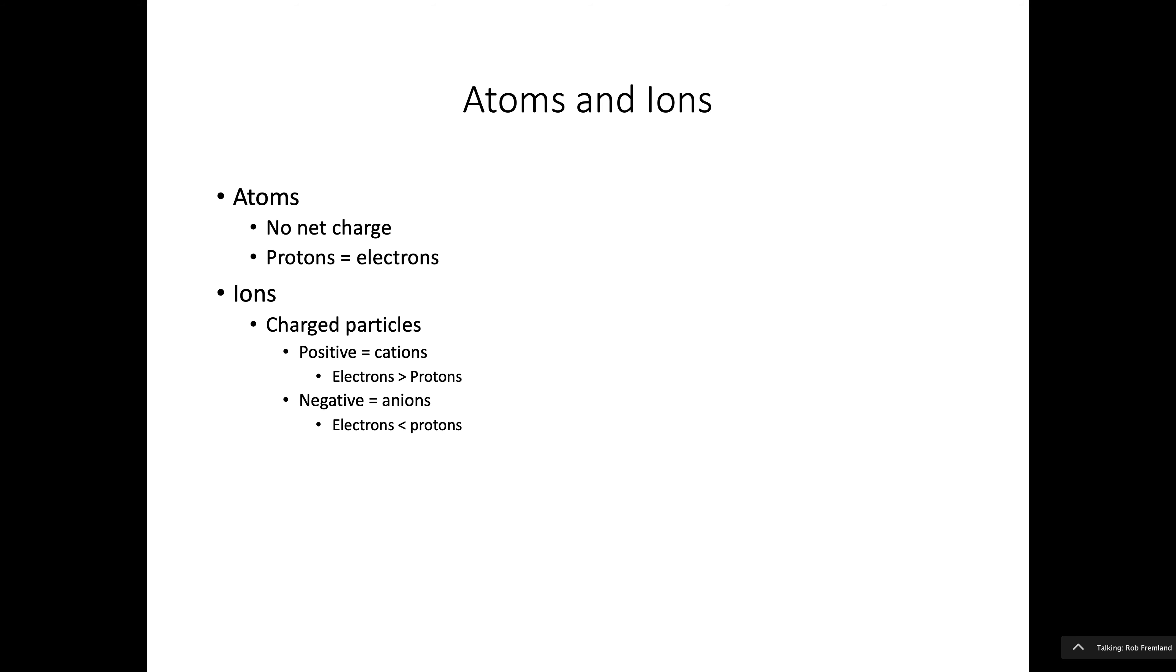So just to summarize, atoms and ions. Atoms have no net charge, and the number of protons is equal to the number of electrons. Ions are charged particles. Positively charged particles are called cations. It's not pronounced cation. It's pronounced cat. And actually, this is backwards. The number of electrons will be less than. I switched these. So I'll fix the slides. Number of electrons will be less than the number of protons. These two things should be switched. Number of electrons are less than the protons. And here the number of electrons are greater than the protons. So I'll switch those arrows.